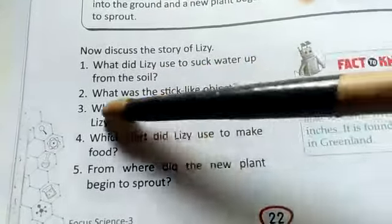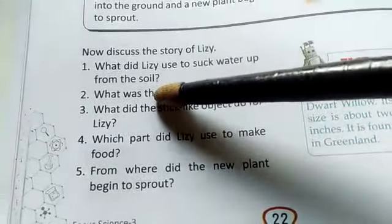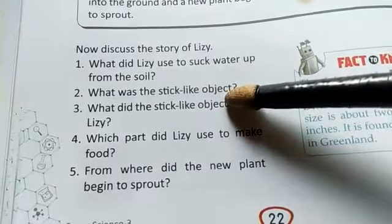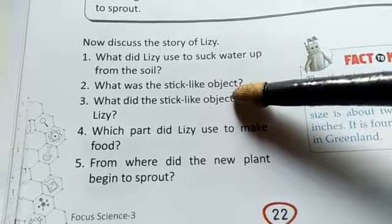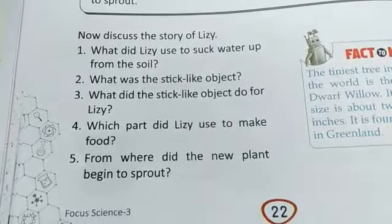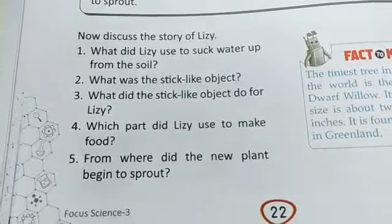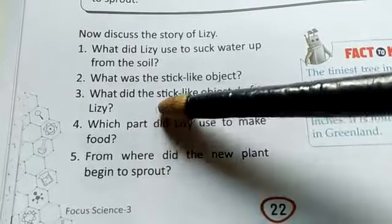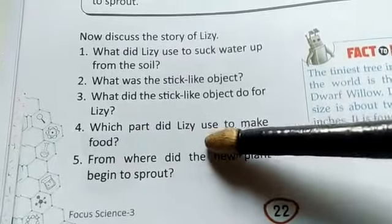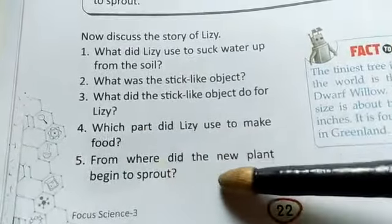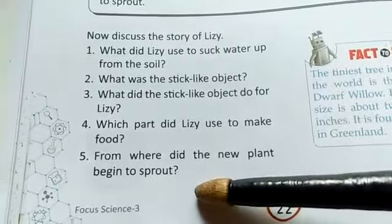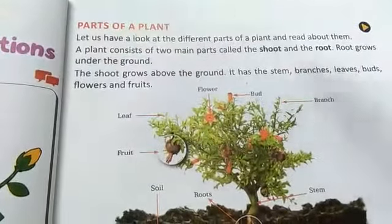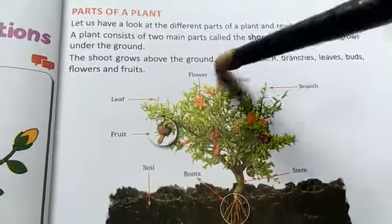You will be able to answer these questions by yourself. What did Lizzie use to suck water from the soil? Roots. What was the stick-like object? It was the green stick, the branch. What did the stick-like object do? It pulled water from the soil. Which part did Lizzie use to make food? Leaves. From where did the new plant begin to sprout? From the beautiful flower.